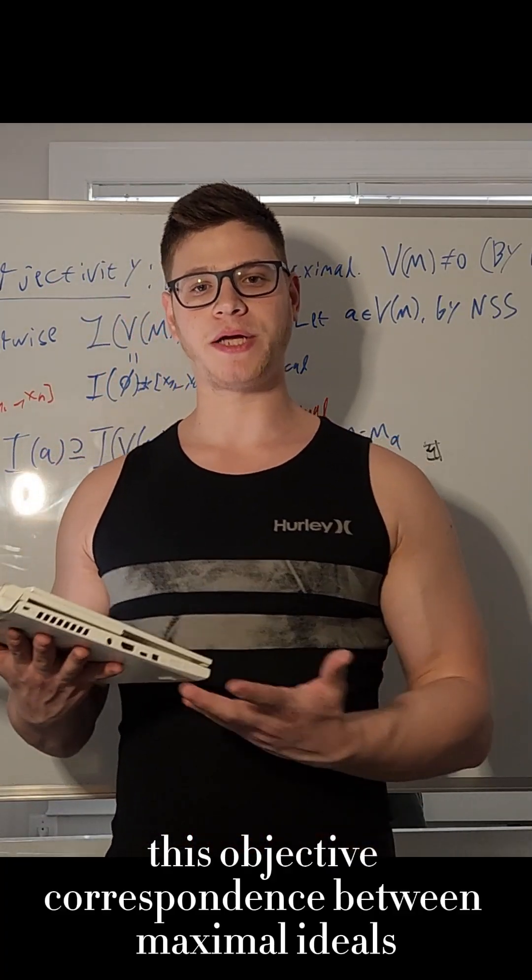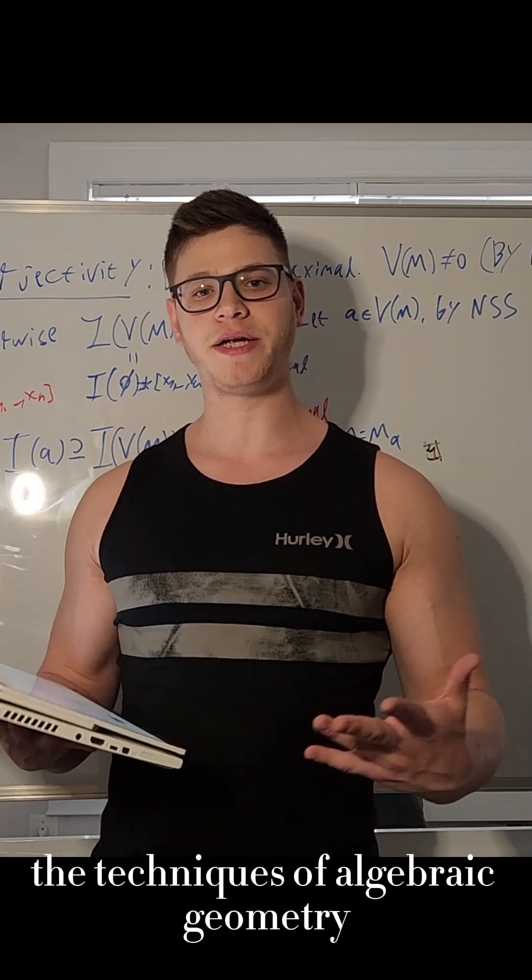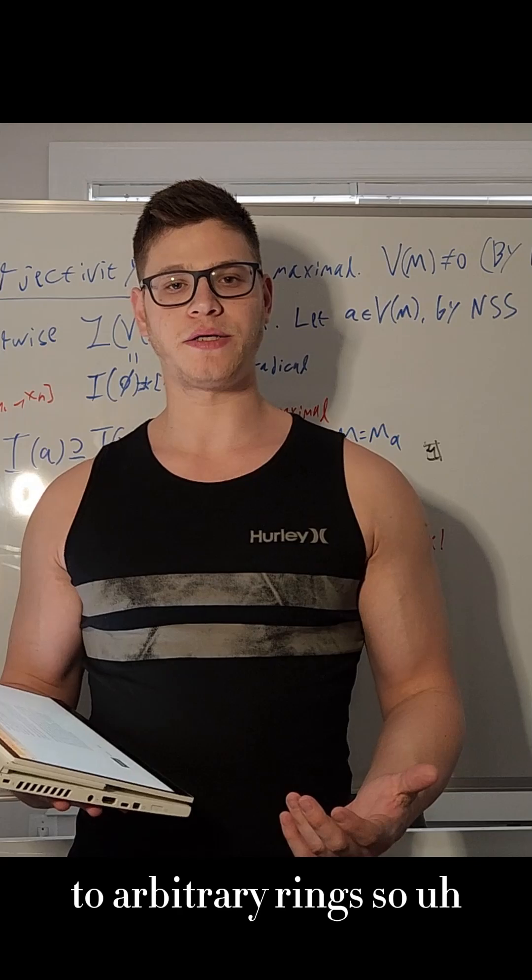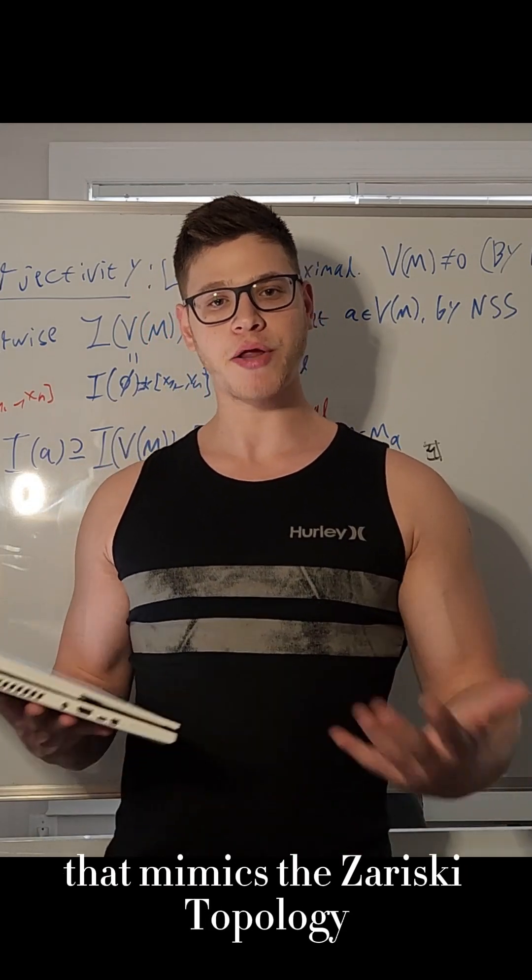This bijective correspondence between maximal ideals and points gives us a first idea of how to generalize the techniques of algebraic geometry to arbitrary rings. So just define a topology on the maximal ideals that mimics the Zariski topology.